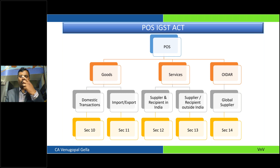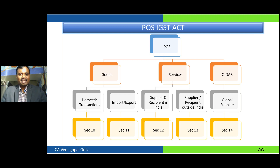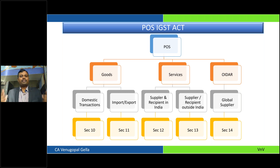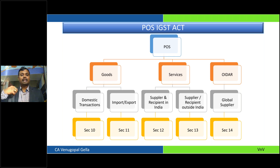In all these transactions, what we are dealing with is place of supply. You might be wondering — in the first slide I used the word 'recipient' generically. But technically, the state that will enjoy the benefit is wherever the place of supply is. Most of the time, we casually think place of supply means from where I am selling — but under GST, place of supply means the place where it is being consumed.